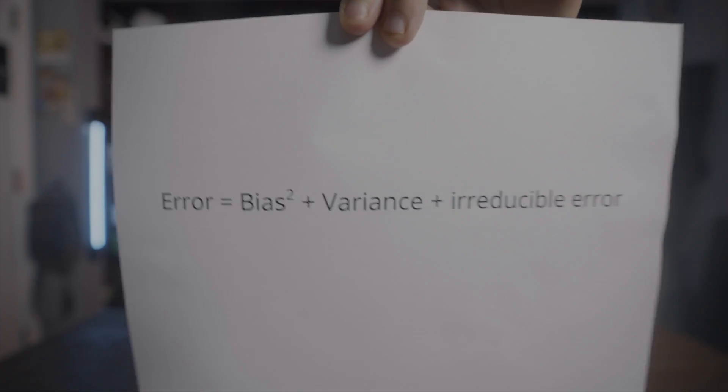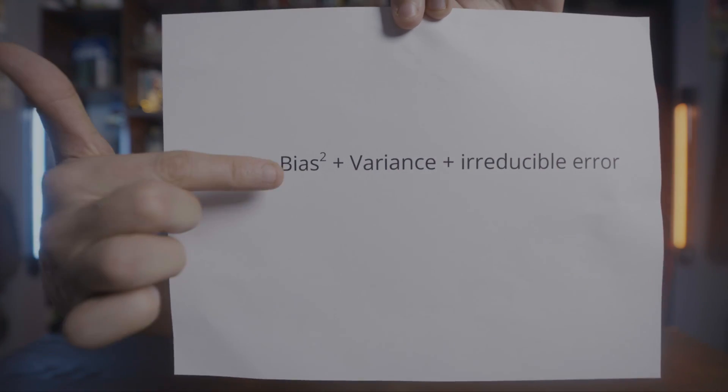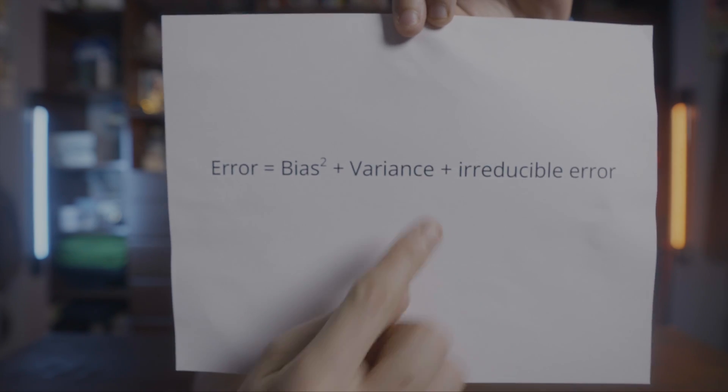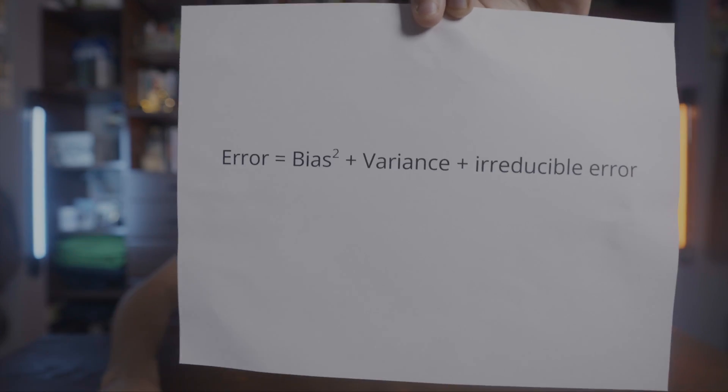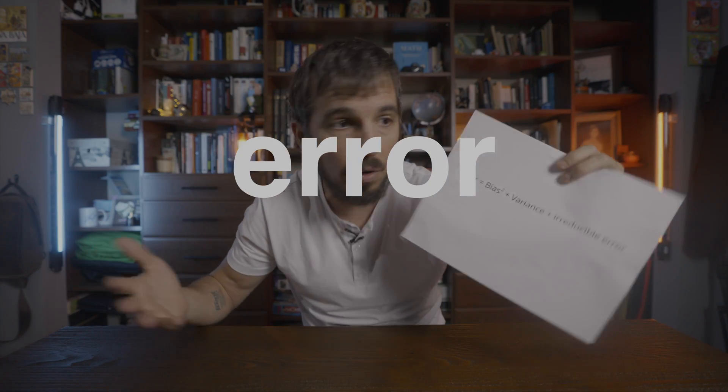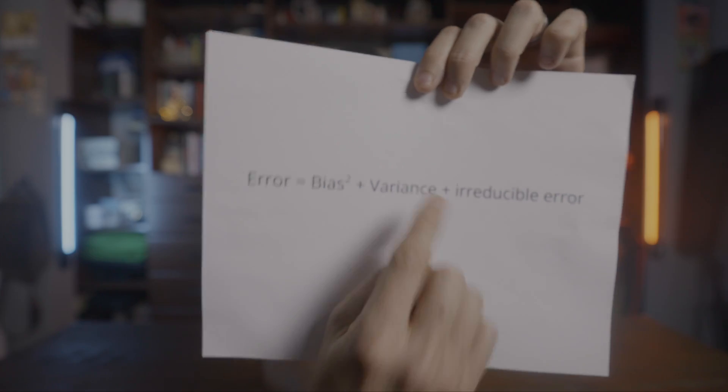Here is the formula. Every model contributes a certain amount of bias and variance to the final prediction error. This term right here, irreducible error, is self-explanatory. We can't do anything about it — that's, for example, noise that exists in our data set. So we're going to forget about it and instead focus on the two components, bias and variance, that we can actually control.